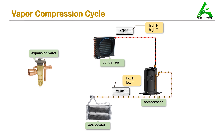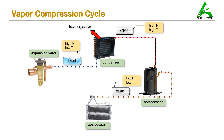This vapor refrigerant at high pressure and high temperature then enters the condenser coil. While it is moving in the condenser coil, it rejects heat. So the role of the condenser coil is to cool down the vapor refrigerant. The refrigerant now comes out of the condenser, and because of heat rejection in the condenser, the vapor refrigerant gets converted to liquid refrigerant and its properties also get changed.